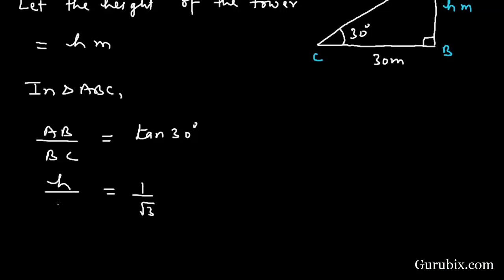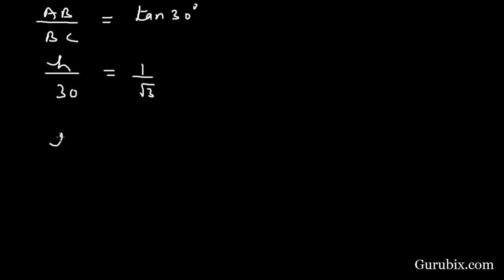AB is h, BC is 30. So h is equal to 30 over square root of 3. We shall rationalize it. Then we have 30 square root of 3 over 3. We shall cancel it out, then it will be 10 root 3.